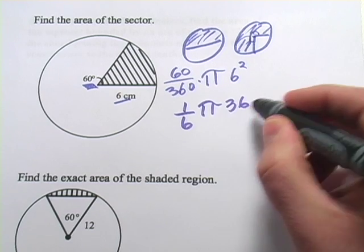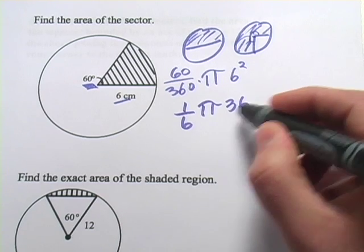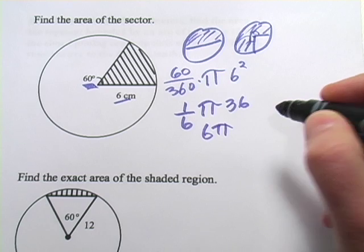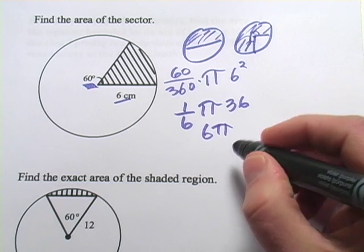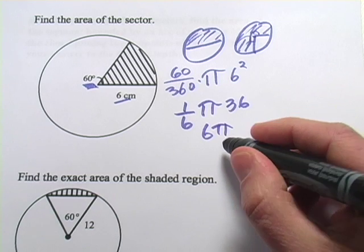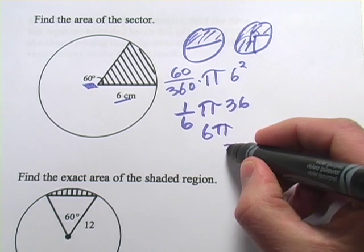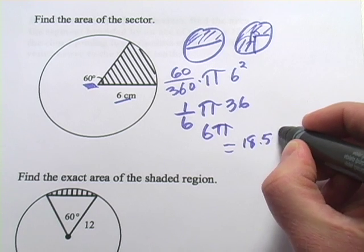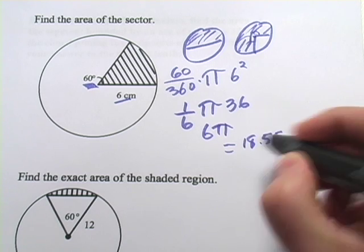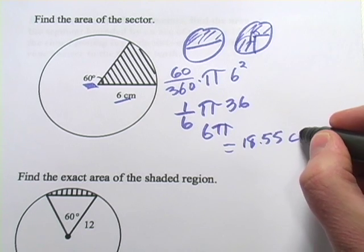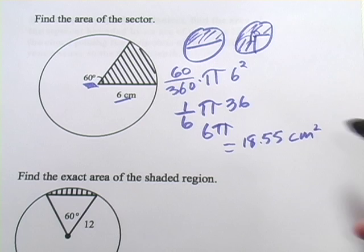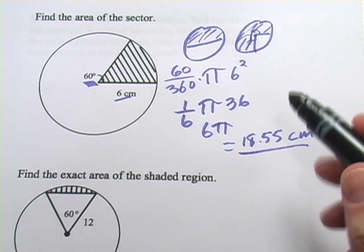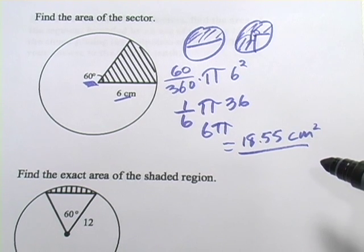One-sixth of 36 would be 6, so this is 6 pi. And if you want a decimal for that, punch it in your calculator — it's going to equal about 18.55. This was centimeters and this is area, so it's centimeters squared. So that is the area of that sector.